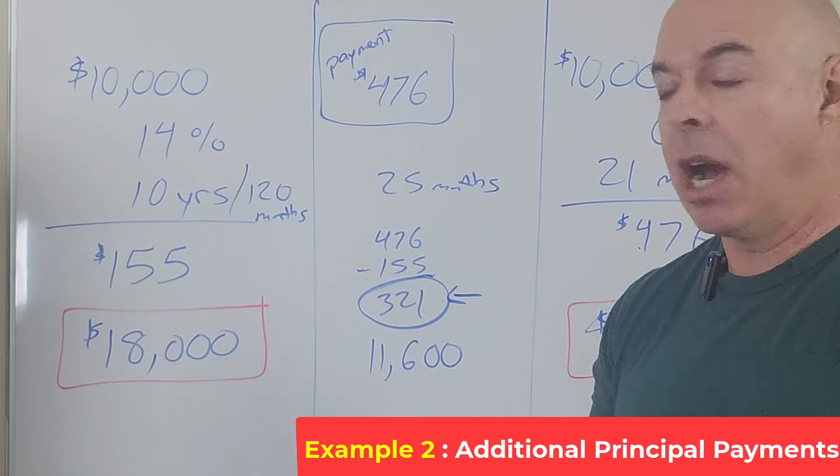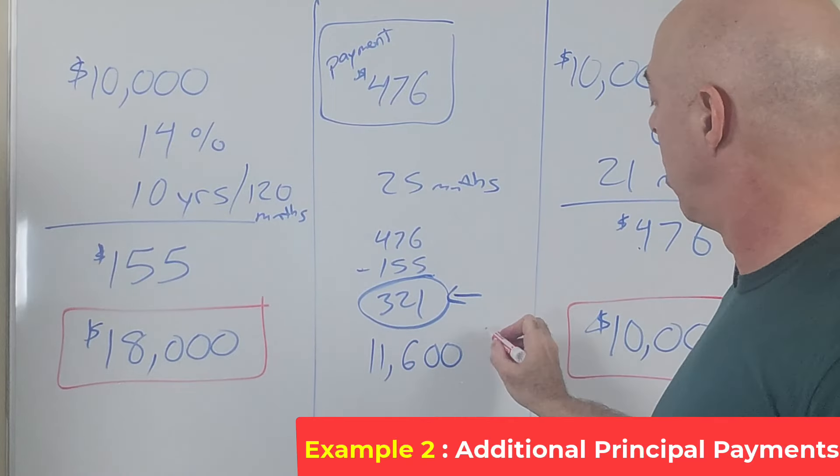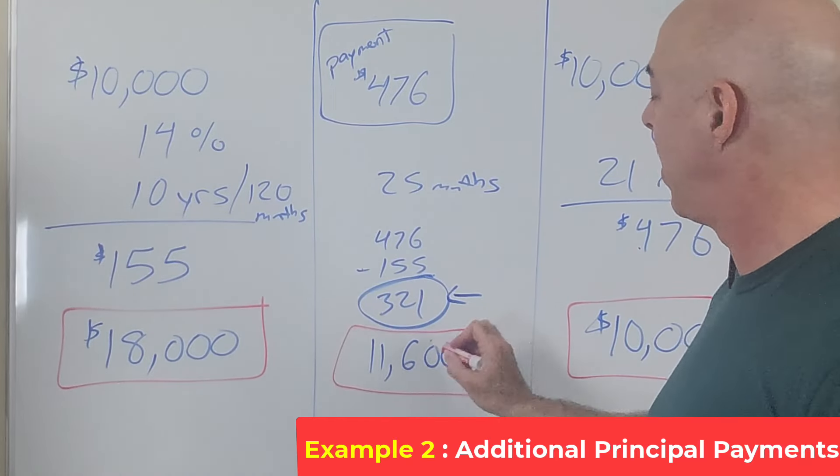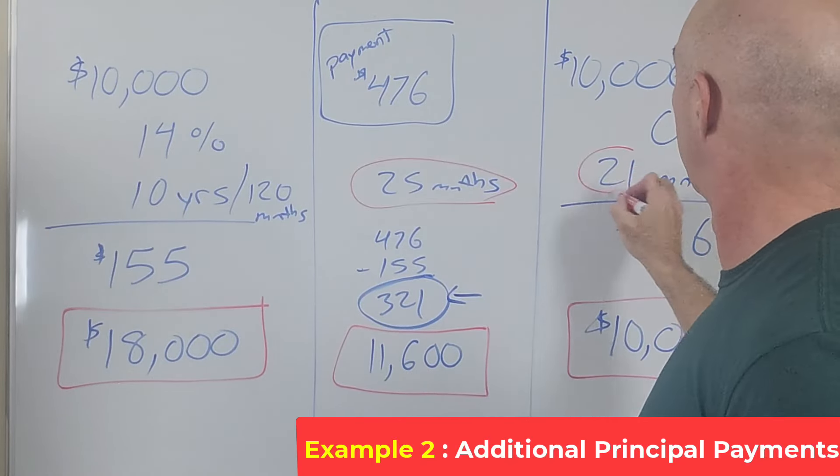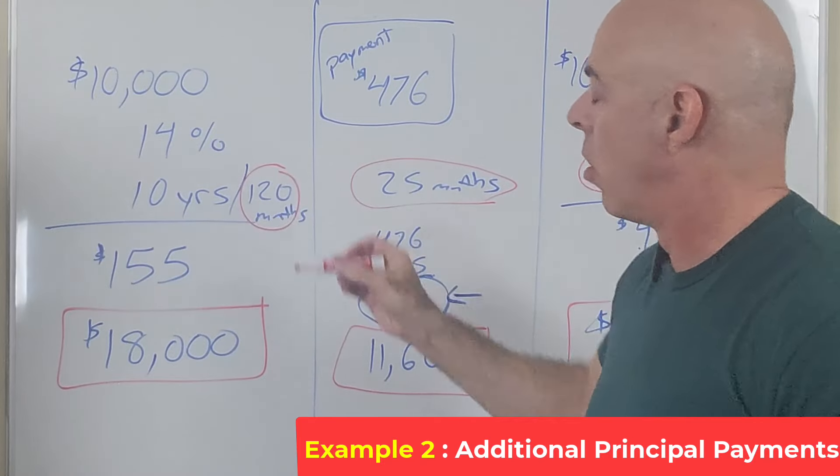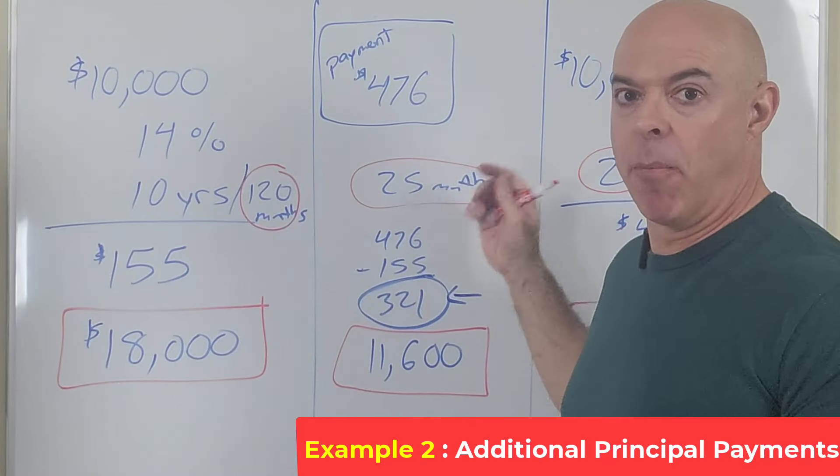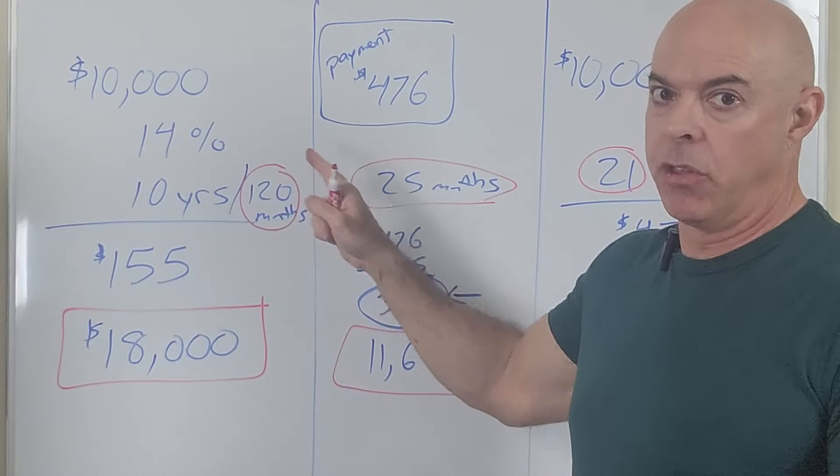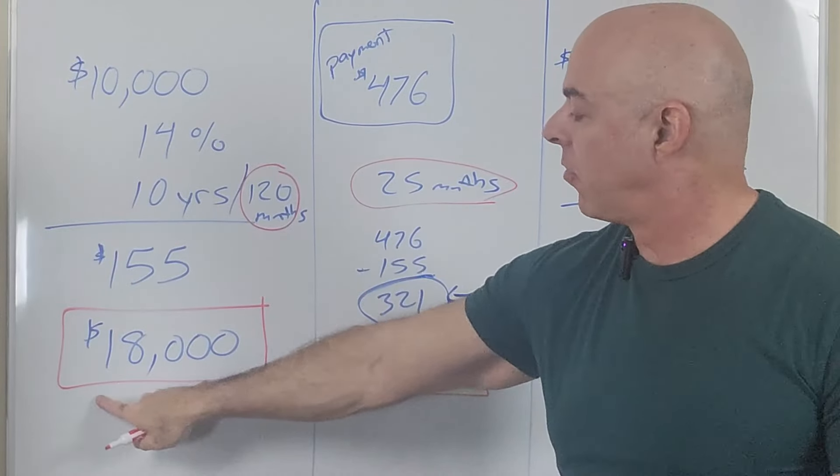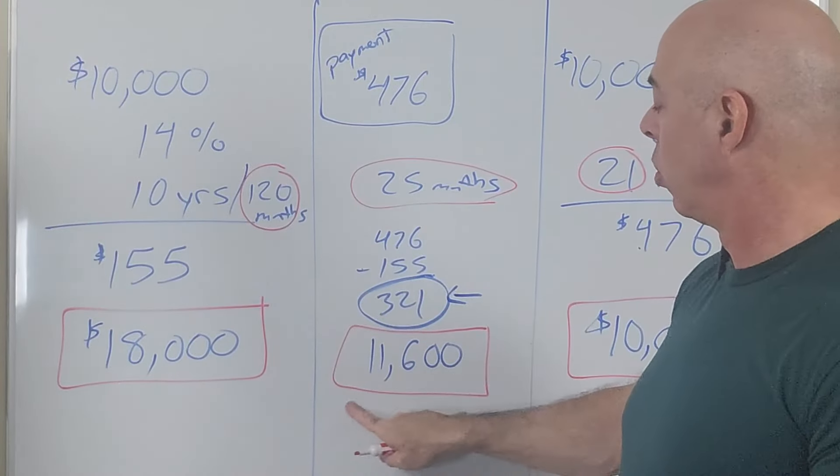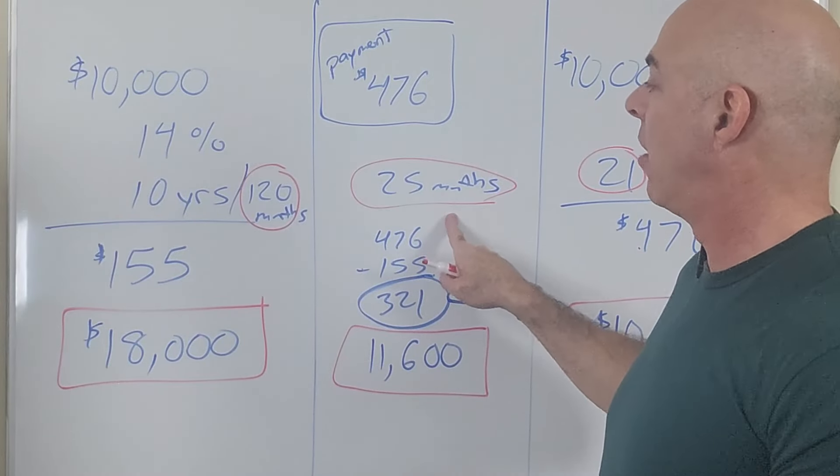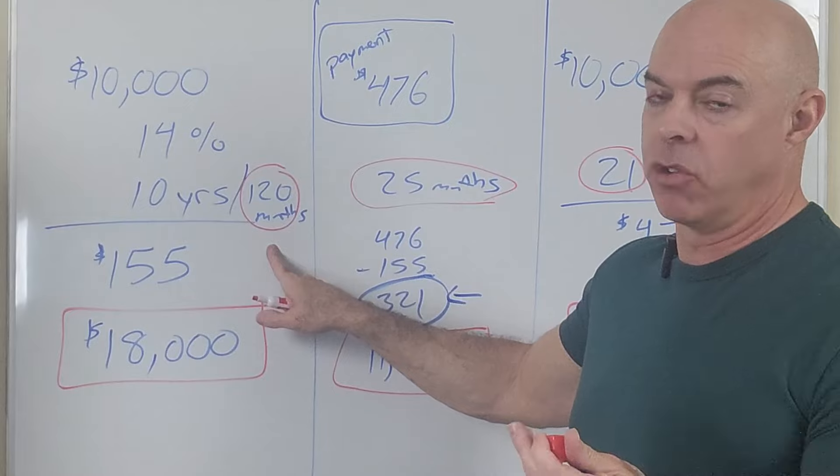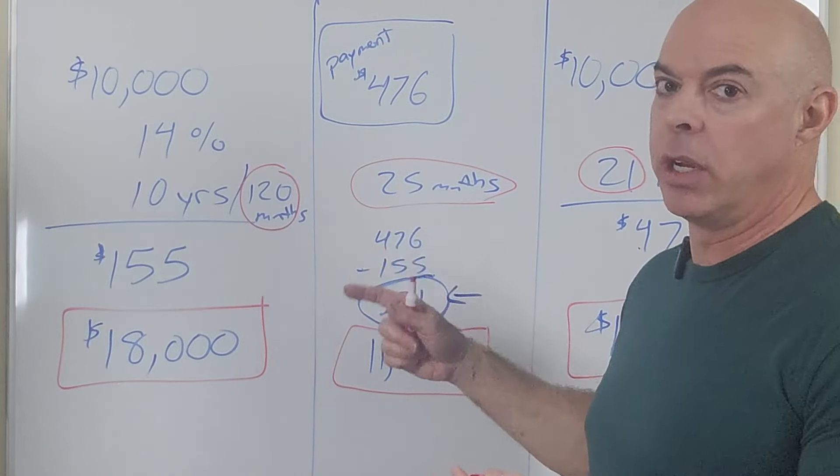Because that additional amount of $321 is going right to principal. I ran it through a calculator. It's going to end up being a total paid of $11,600 and it's going to be 25 months. So if you just were to compare making a larger payment on the current loan, you went from $18,000 total paid to $11,600, substantial difference. And you went to 25 months instead of 120 or 10 years. So it's about two years.